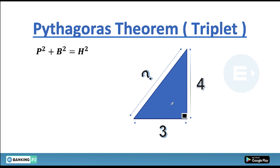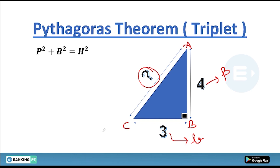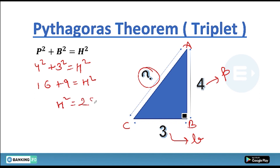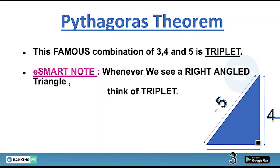Let's apply Pythagoras theorem. For a triangle with perpendicular = 4 and base = 3, hypotenuse² = 4² + 3² = 16 + 9 = 25, so hypotenuse = 5. This gives the famous triplet combination 3-4-5.